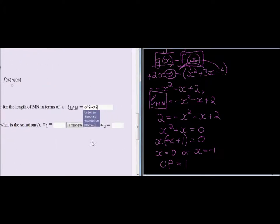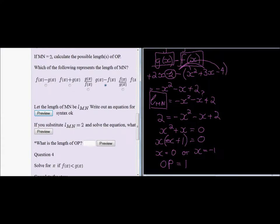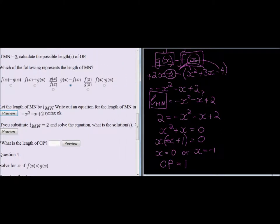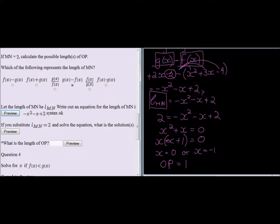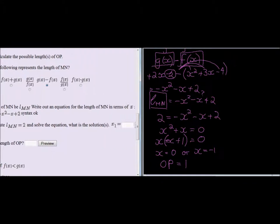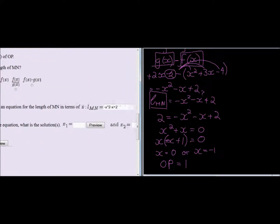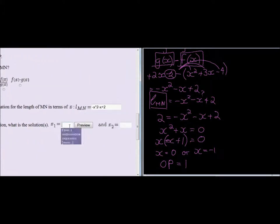Next question - let's preview it. Looks correct. If you substitute the length of MN with 2 and solve the equation, what are the solutions? Well, we found one solution was negative 1, the other solution was 0.